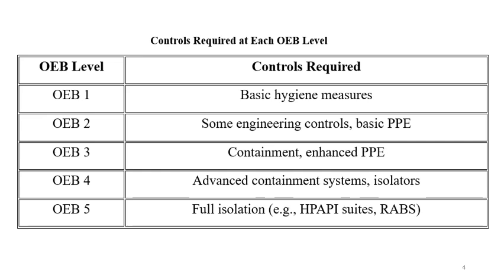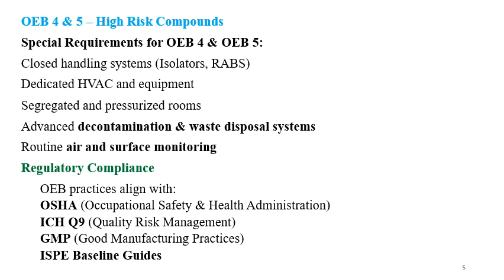OEB4 and OEB5 are high-risk compounds with special requirements. Closed handling systems such as isolators are required, along with dedicated HVAC and equipment. Segregated and pressurized rooms are needed to control contamination and limit exposure of chemical substances to personnel. Advanced decontamination and waste disposal systems are required to protect the environment, and routine air and surface monitoring is mandatory.